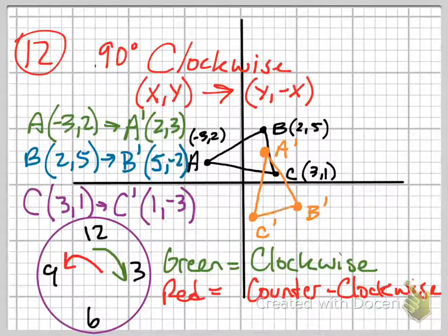Connect all the dots, and you can see it's the same shape, same size, but notice how the triangle has rotated 90 degrees clockwise. So that is how you do a 90 degrees clockwise rotation.